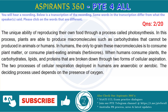The unique ability of producing their own food through a process called photosynthesis. In this process, plants are able to produce macromolecules such as carbohydrates that cannot be produced in animals or humans. In humans, the only way to gain these macromolecules is to consume plant matter, or consume plant-eating animals, herbivores.